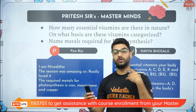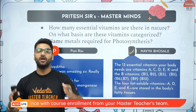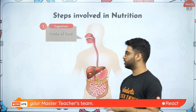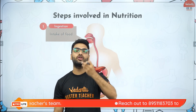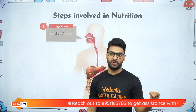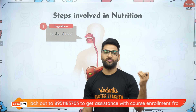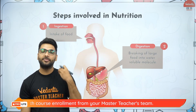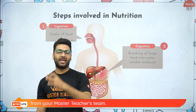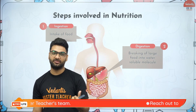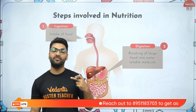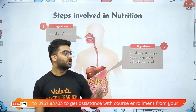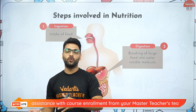I want all of you to keep answering in the comments section every question I ask, because your name will be flashed on the screen in the next session. Talking about the steps involved in nutrition — we begin with ingestion, which involves the taking in of food through the mouth. Humans practice holozoic nutrition, that is intake of solid and liquid food for energy. After the food is eaten, the digestion process begins in the mouth. It is of two types: mechanical digestion using teeth (chewing), and chemical digestion involving enzymes, saliva, pancreatic juices, and liver secretions.